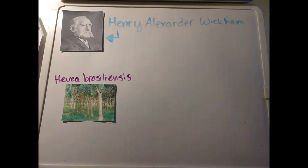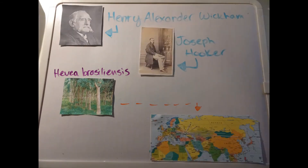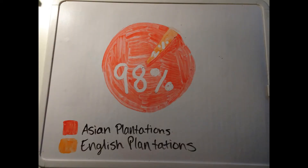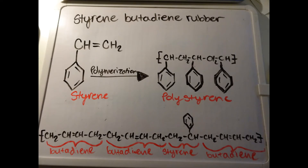In 1867, Henry Alexander Wickham left the Amazon with thousands of seeds of Hevea brasiliensis, which later proved to be the most prolific source of rubber latex. With the help of botanist Joseph Hooker, from the original seeds, there were plantations set up in both England and Southeast Asia. By 1932, 98% of the rubber was grown in the Asian plantations, which proved to be a problem for the United States after the bombing at Pearl Harbor during World War II. The same strain was placed on the Germans during the First World War, which led the German government to see if they could synthetically create an equal, if not better, substitute. Their solution was styrene butadiene rubber.